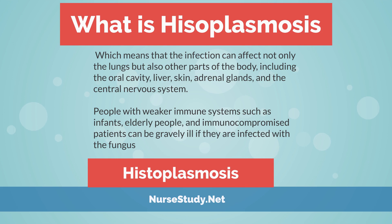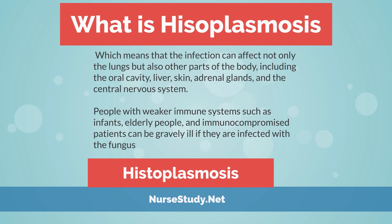Disseminated infection can affect the oral cavity, liver, skin, adrenal glands, and the central nervous system. People with weaker immune systems — such as infants, elderly people, and immunocompromised patients — can be gravely ill if they are infected with the fungus.